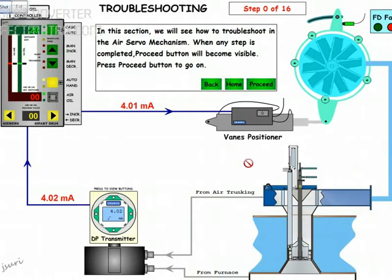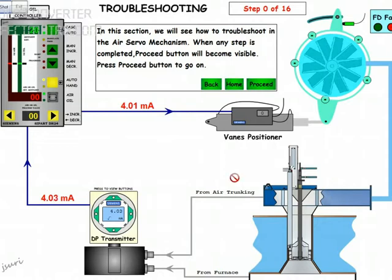Our aim here is to identify the fault. You can see this is the main burner and the pilot burner. We need to identify the fault. To identify the fault, normally we run it in auto first.